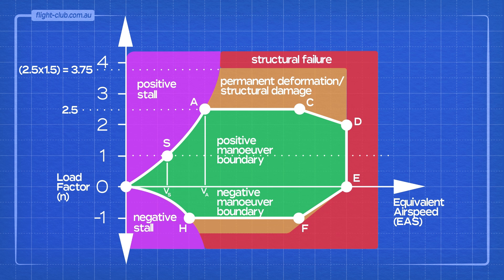Permanent deformation of the structure may occur at load factors between 2.5 and 3.75, so it's not safe to assume that the load factor may be increased above the limiting value just because there is a safety factor.